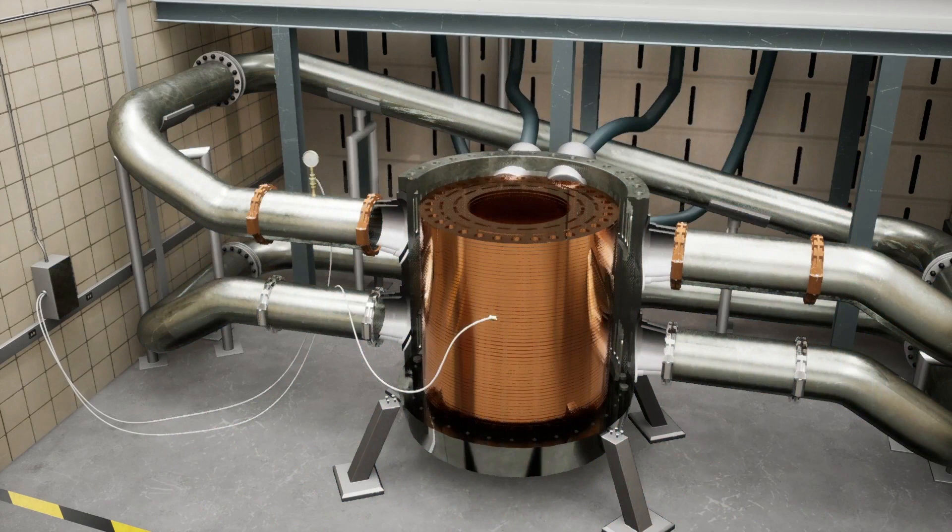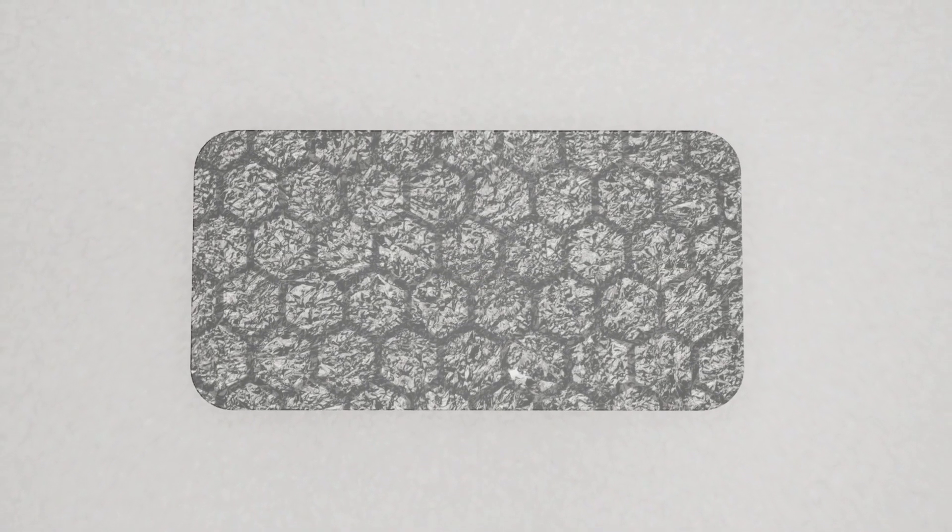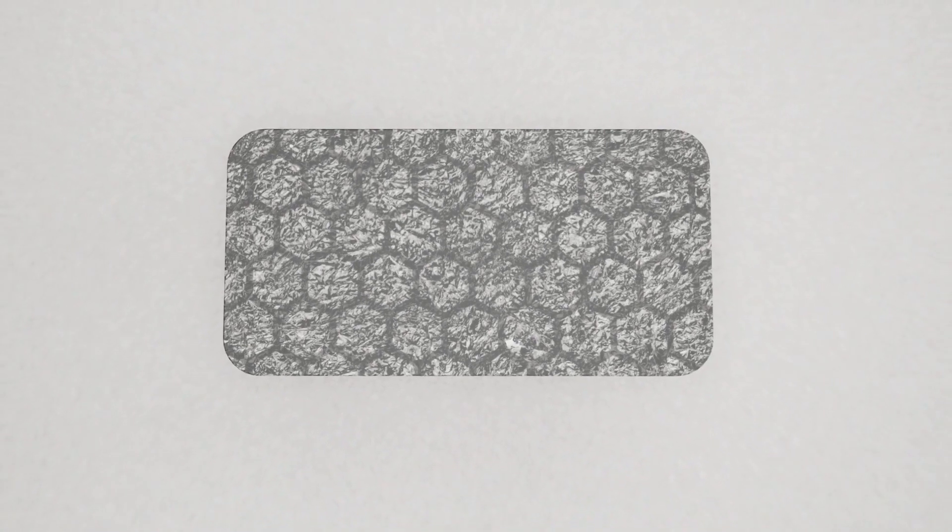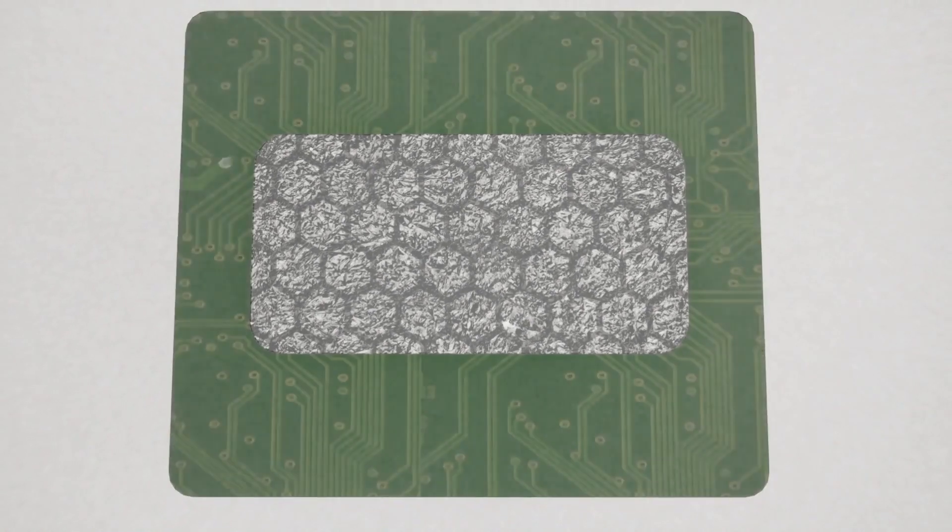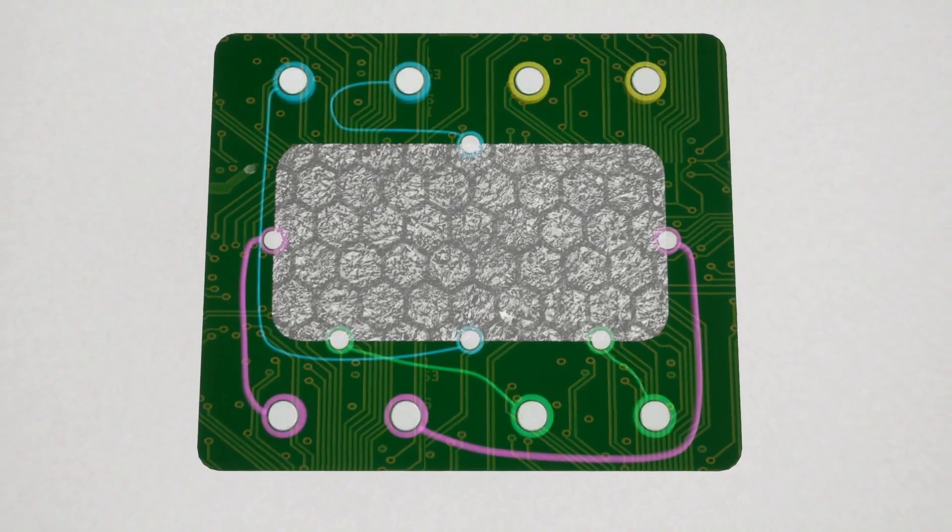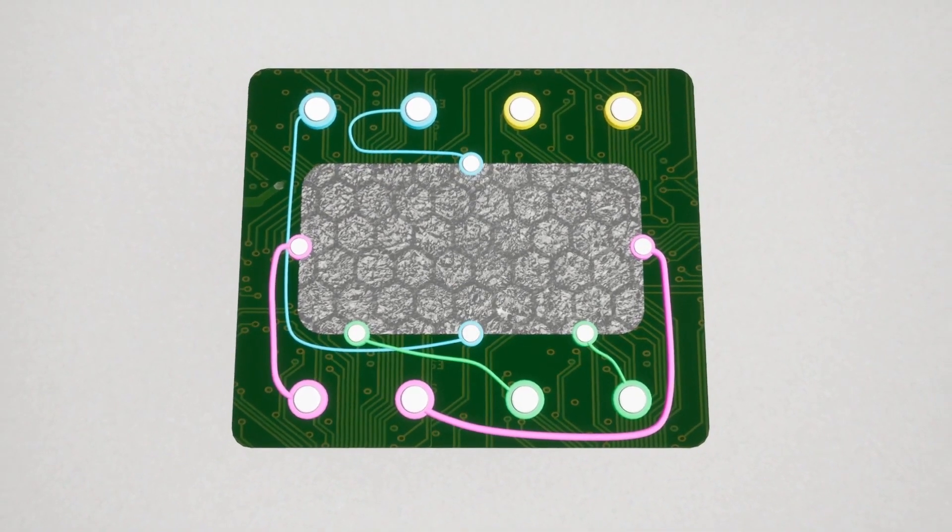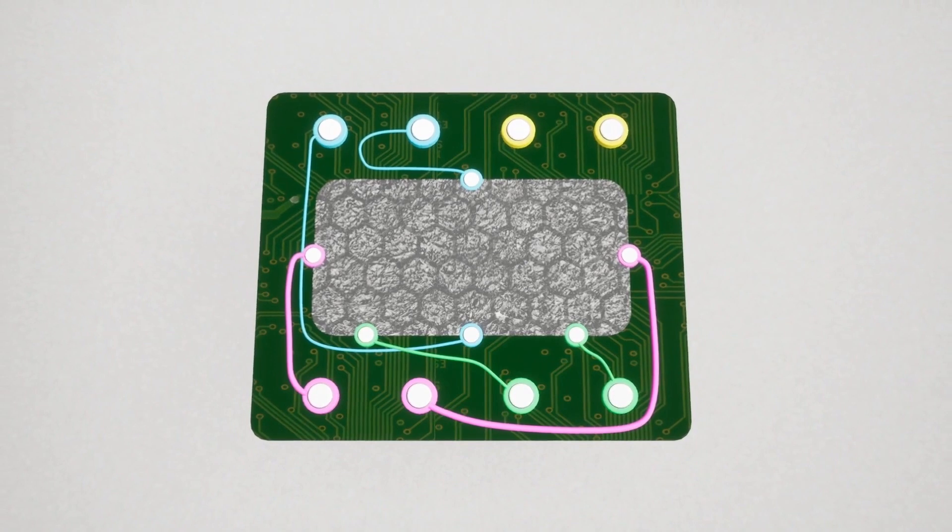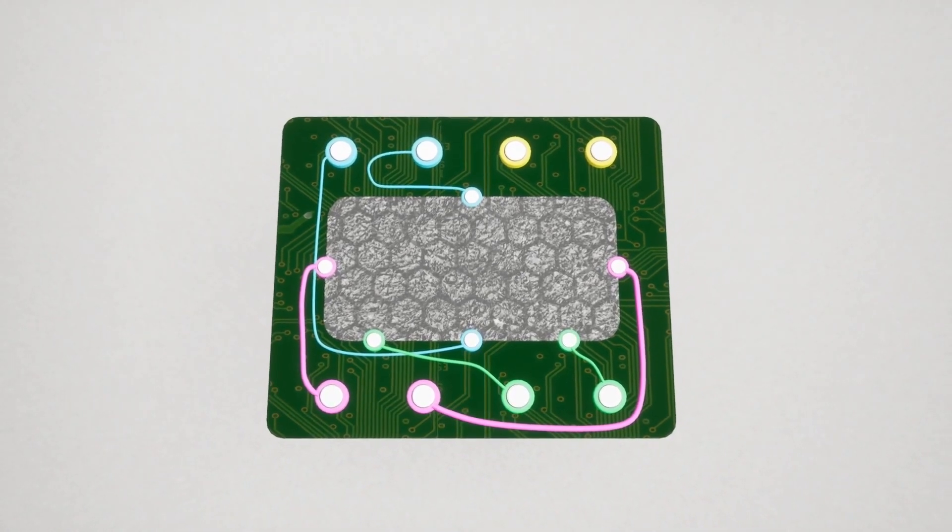Now let's put something inside the magnet and do an experiment. Here's a material called graphene, which is basically a one atom thick layer of carbon that has some really interesting properties. Physicists want to know more about how it behaves to find out if it could be useful for building faster computers or other applications.